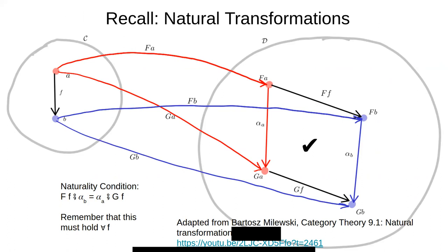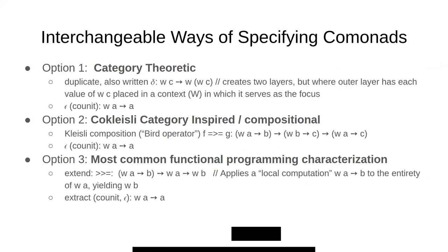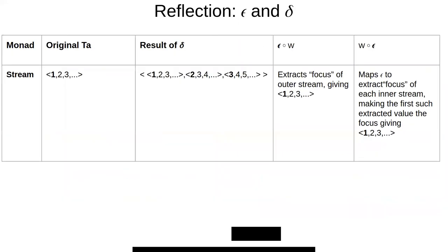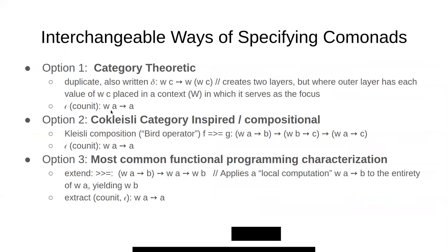These definitions have to observe the co-monad laws, and we're going to talk about where those laws come from from two different perspectives: first, from the co-monoid laws; and second, from adjunctions — just as every adjunction gives rise to the laws associated with monads, so it gives rise to the laws associated with co-monads, dictating how the different definitions relate to one another.